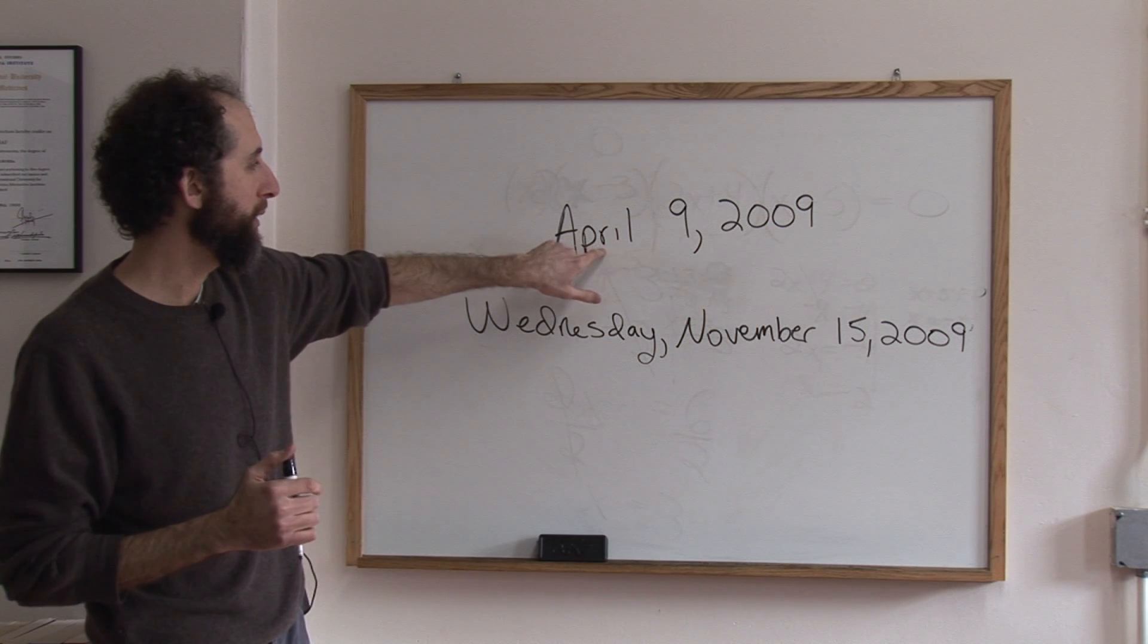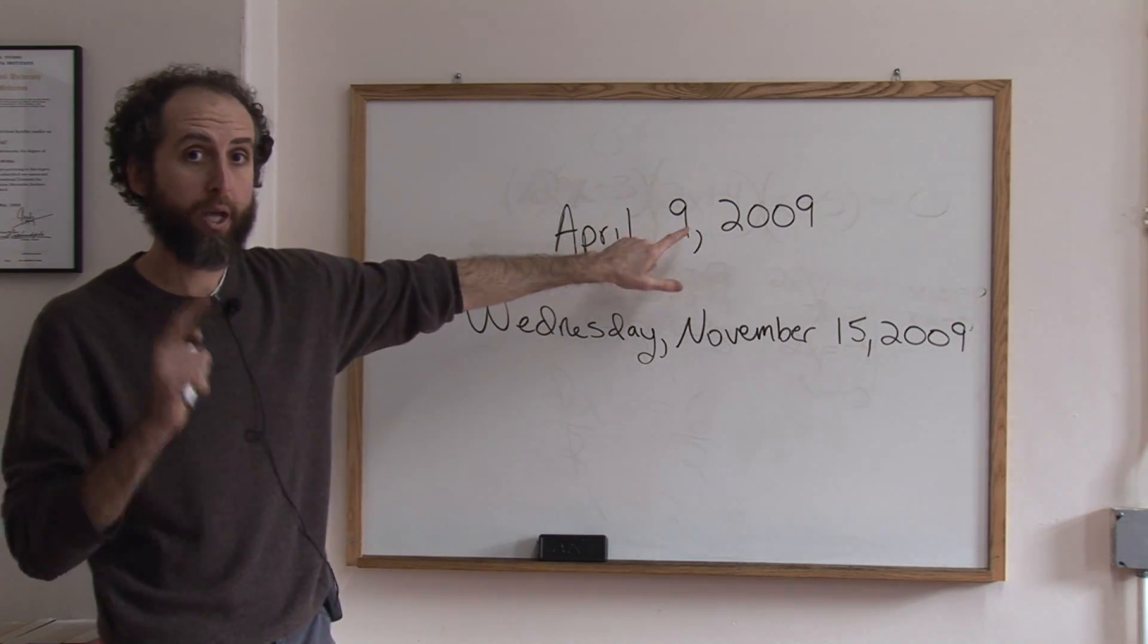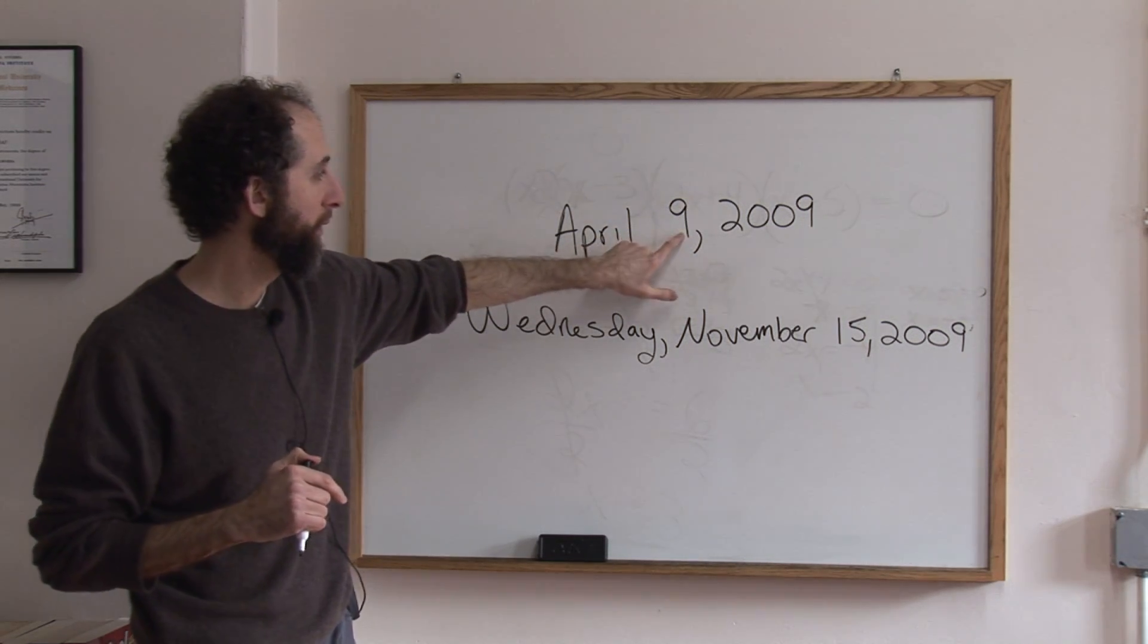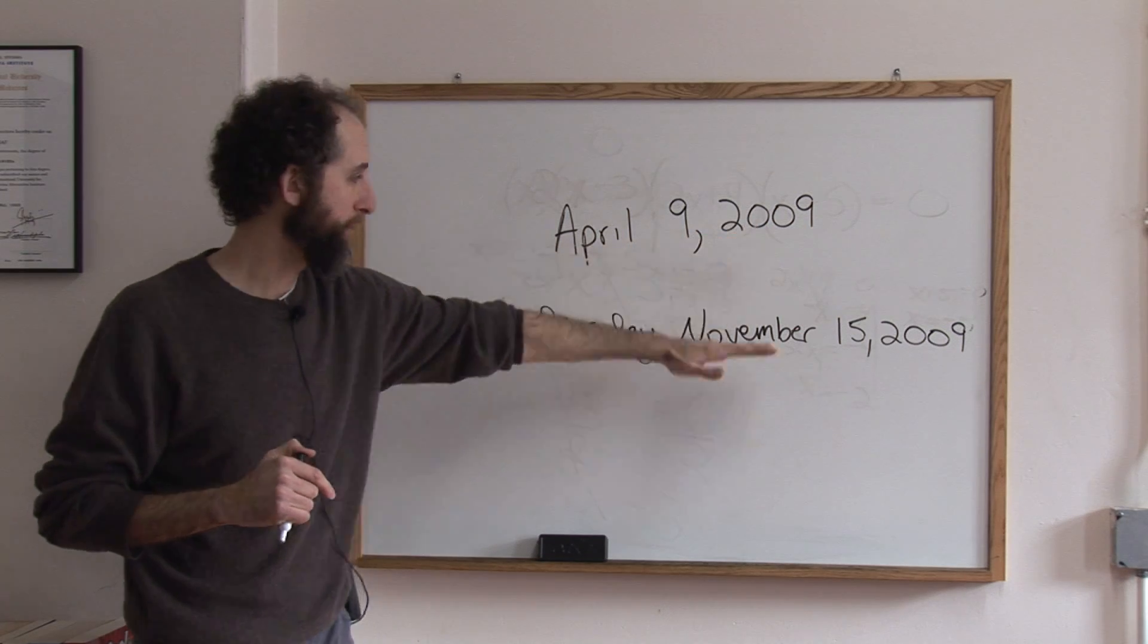So there's no comma between the month and the day. The comma becomes between the date and the year. Same in this case as well.